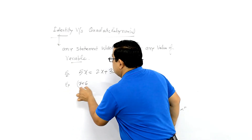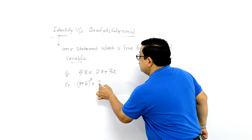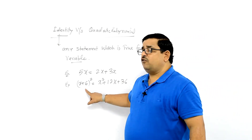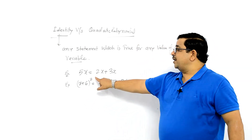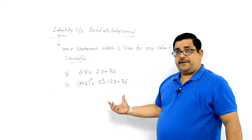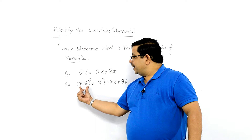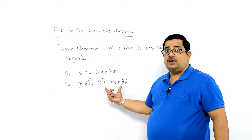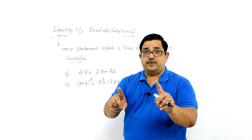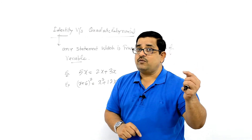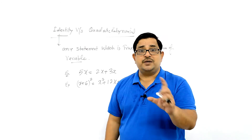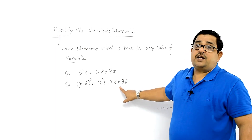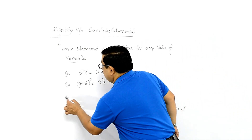दूसरा example: (x + 6)² = x² + 12x + 36। यह formula है जिसे हम जानते हैं। अगर left hand side में x की कोई भी value रखें और simplify करें, और right hand side में भी same x की value रखें, तो left hand side = right hand side। Any value of x के लिए यह हमेशा true होगा, इसलिए यह भी एक identity है।